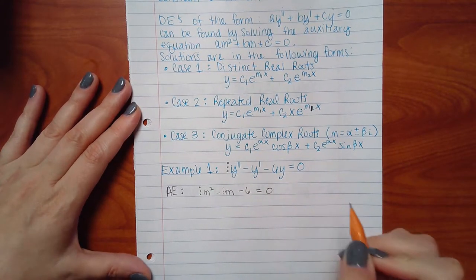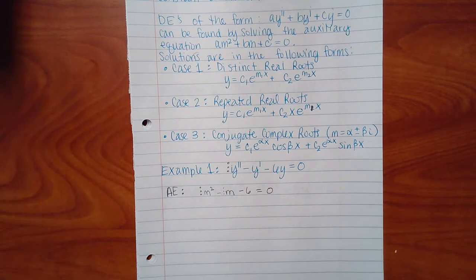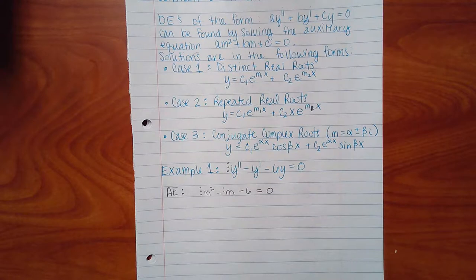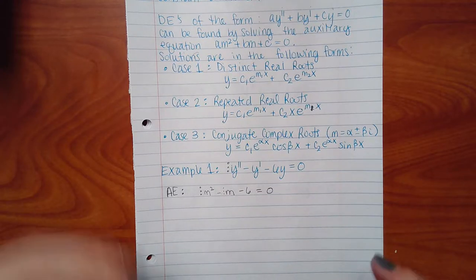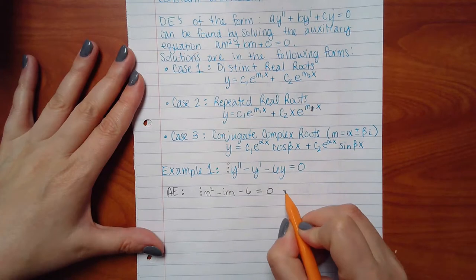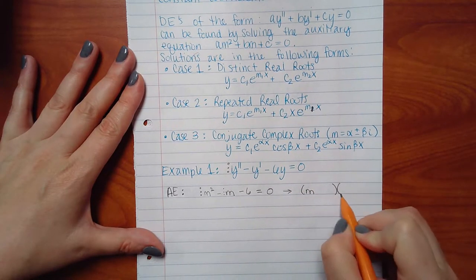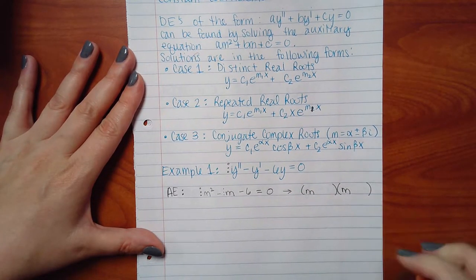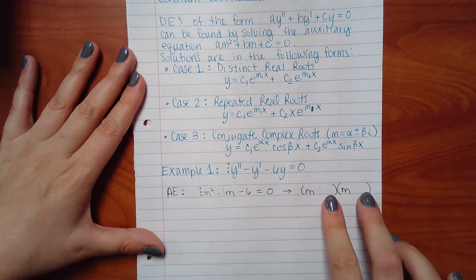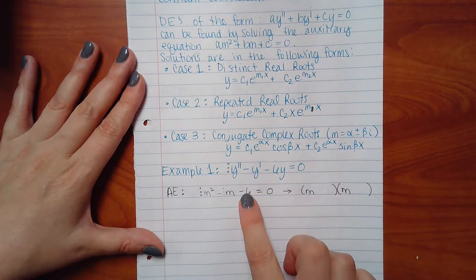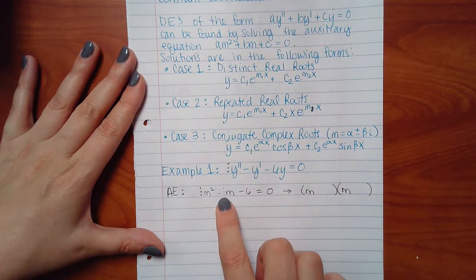To solve the auxiliary equation m squared minus m minus 6 equals zero, first try to factor it; if you can't, use the quadratic formula. For this one, try factor pairs: 6 and 1 give a difference of 5, so that doesn't work.